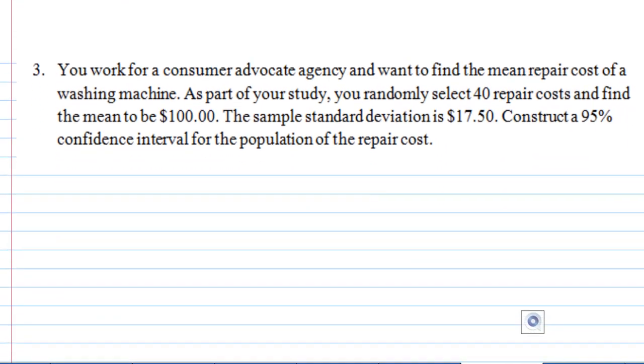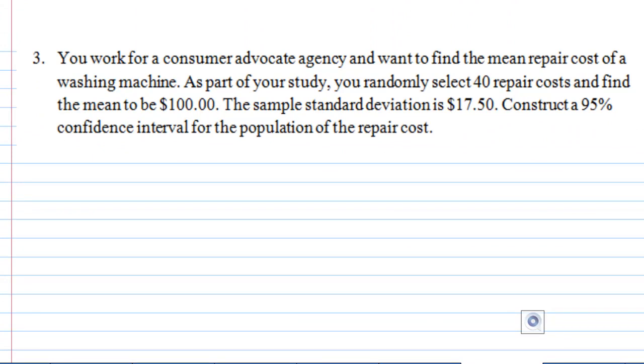So, let's look at the problem now. We are given a few things. First, you selected 40 repair costs, so n = 40. You found the sample mean of these 40 costs is $100, so x̄ = 100. And you also found the sample standard deviation is $17.50, so s = 17.50.